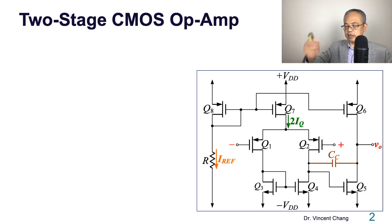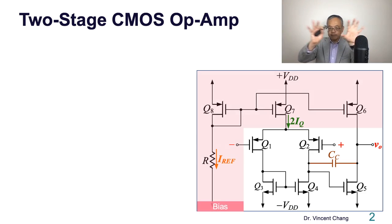Let's start with the two-stage CMOS op-amp: the differential stage and the common source gain stage. Both stages are biased by two sets of current mirrors composed of Q8, 7, and 6. The current mirror of 8 and 7 supply the bias current of the differential stage, which is 2IQ. Another current mirror of Q8 and Q6 supply the bias current of the common source gain stage, the current going to Q5.